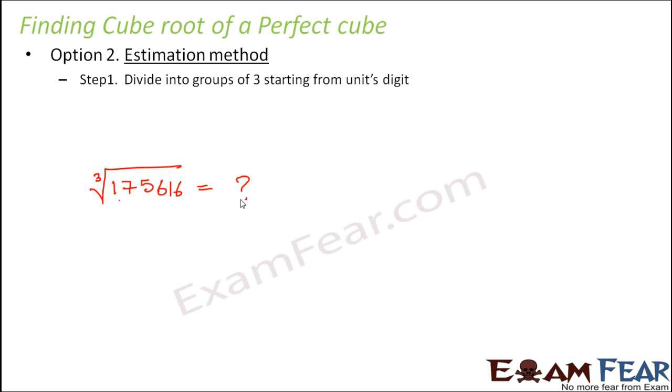So we will go step by step. So the first step is that take the number, divide it into groups of three digits and start this division from the units digit. So 6 is the units digit, so start from 6 groups of 3. So these are the two groups that are formed. Let us call this group 1, let us call this group 2. So that's your step number 1.